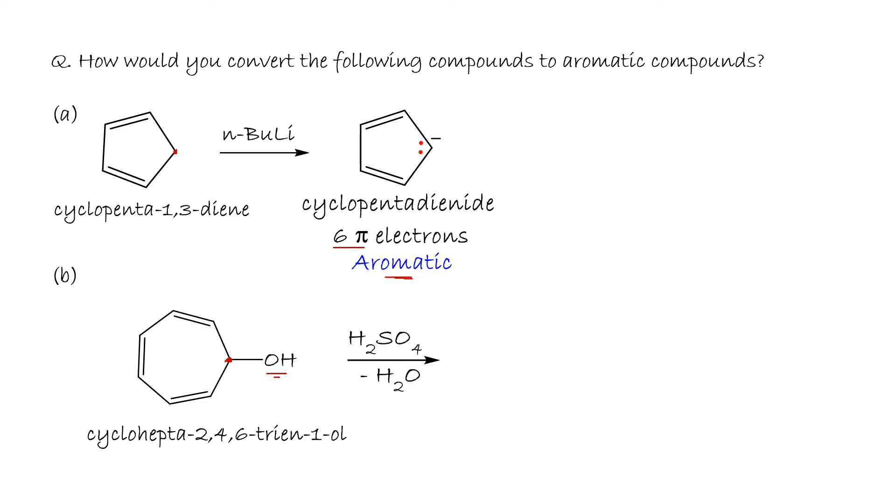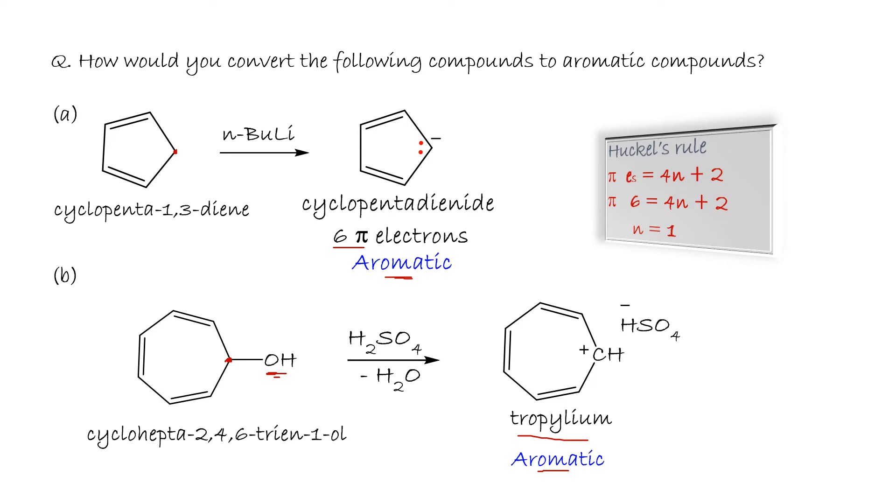This oxygen gets protonated first, followed by elimination of water to form tropylium ion—a seven-membered ring with six pi electrons, aromatic according to Huckel's rule. Number of pi electrons = 4n+2, where n is a whole number. We have six pi electrons, so 4n+2, n equals one. It's a whole number, so this system is aromatic.